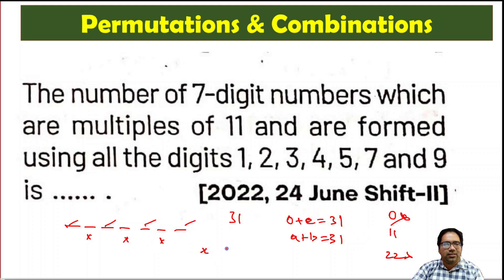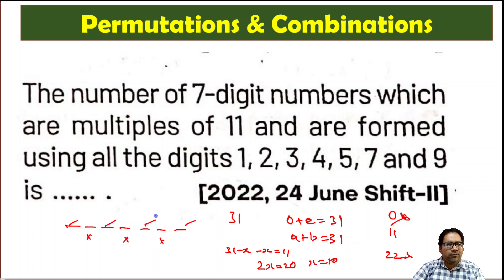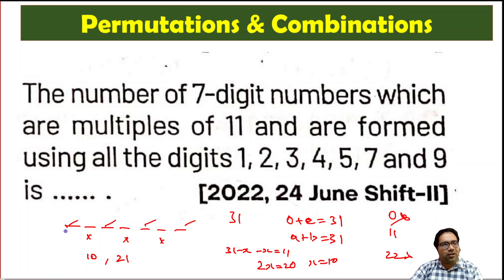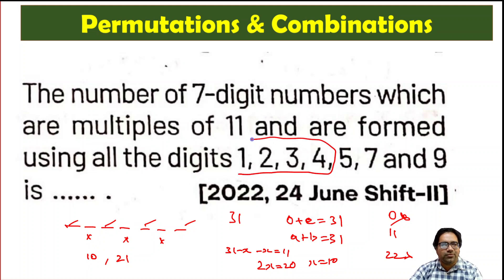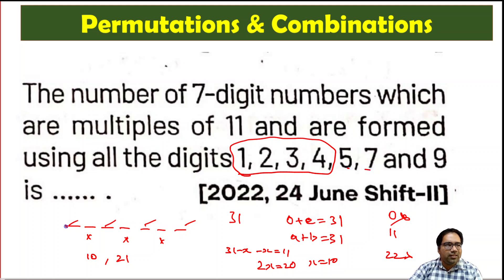If we call one group's sum x, then the other is 31 minus x, and the difference (31 minus x) minus x equals 11, giving 2x = 20, so x = 10. That means one group sums to 10 and the other to 21. If the odd-position digits must sum to 10, the only way to pick 4 of our 7 digits to total 10 is to take 1, 2, 3, and 4 — the smallest four — since 1+2+3+4 = 10 and we cannot include 5, 7, or 9.